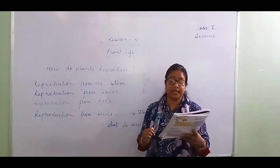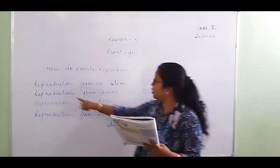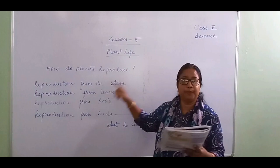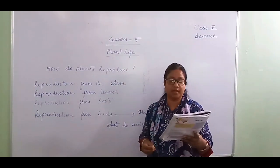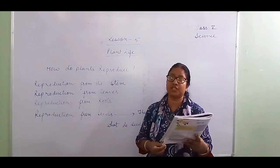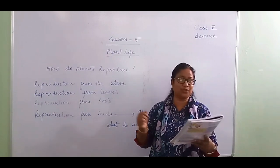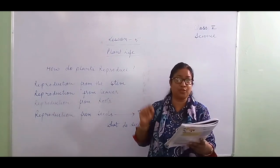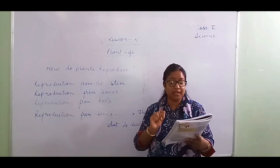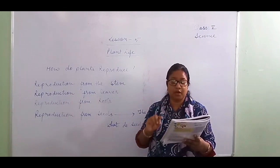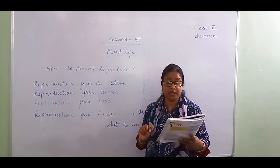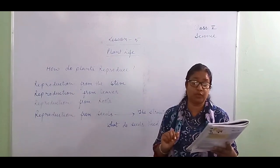Reproduction from the leaves — from the leaves, new buds or little new plants come out. The Bryophyllum plant has thick and fleshy leaves. When you go around the school, you can see Bryophyllum plants. From those leaves, new plants come out on the edges. The leaves have buds along the edges, and new plants grow from these buds.